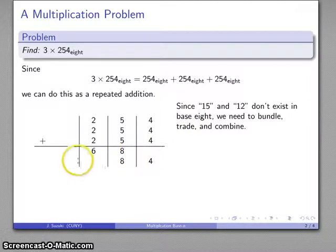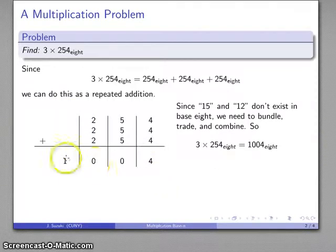That's actually two bundles of 8. I'll bundle and trade. Each of these becomes one thing in the next place over. Now I have a bundle of 8, and I have this bundle very nicely right here. That's going to become one thing in the next place over. My last step is recording that I don't have any of these, but I do have 4 of these and 1 of whatever this largest unit is. So my final product is 1004 base 8.